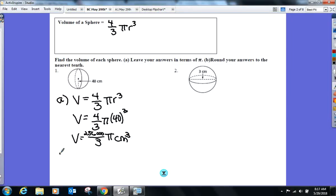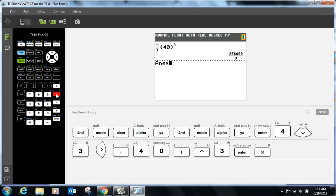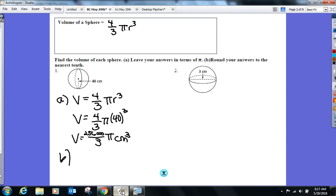And that is centimeters cubed now. If you guys left it as 85,333 and a third pi, that's fine, too. Now turn it into the nearest tenth. Now you can put your pi in. Multiply by pi and round to the nearest tenth. Look at that large number.